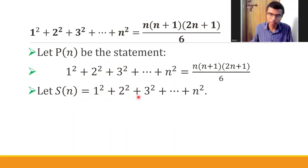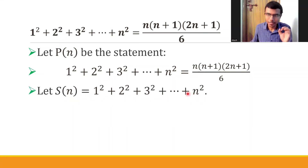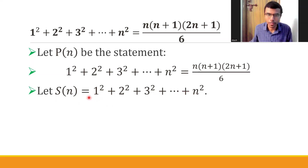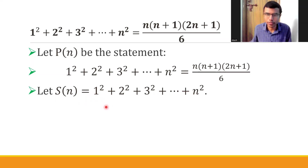Let S of n equal 1² + 2² + 3² up to n², as given in the textbook. The format follows the textbook closely, with a few extra steps added for easier understanding.